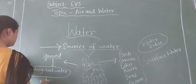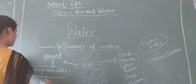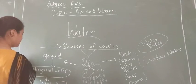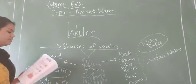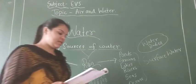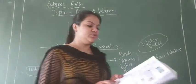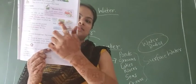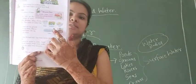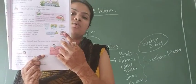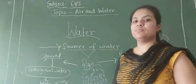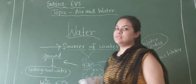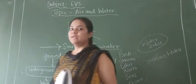We dig wells to take this underground water. You can see well here and some are the water bodies. These are all called water bodies. Water body means where water is collected.